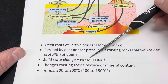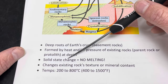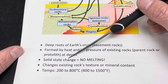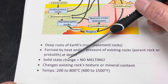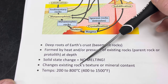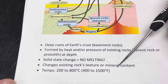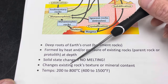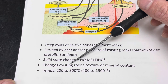So metamorphism is a solid-state change. We are not melting the rock. There may be some tiny bit of melting possible with some of our higher-grade metamorphic rocks, but basically we're changing the rock's texture or the minerals that make up the rock by the presence of heat and pressure.